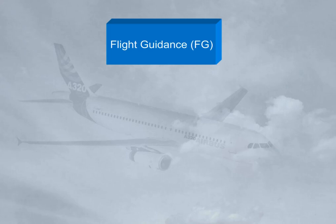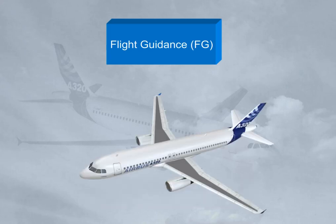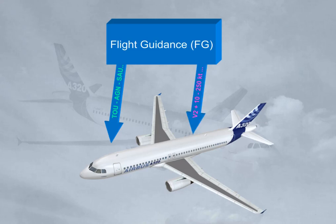They operate in various modes so as to guide the aircraft to associated targets, such as speed, heading, glide slope, or FMS lateral flight plan. An FG mode and its associated target are managed when the FG guides the aircraft along the flight plan, or when the aircraft flies a speed profile computed by the FMGS.